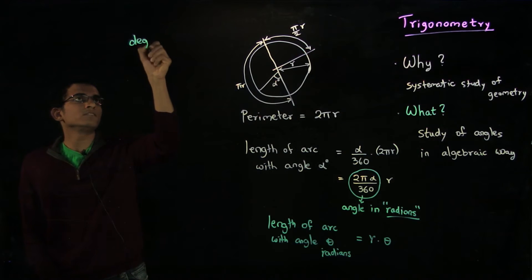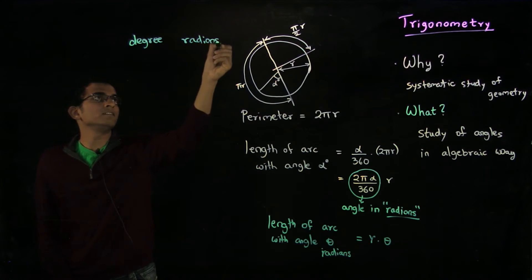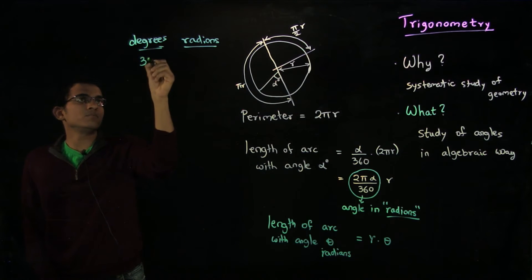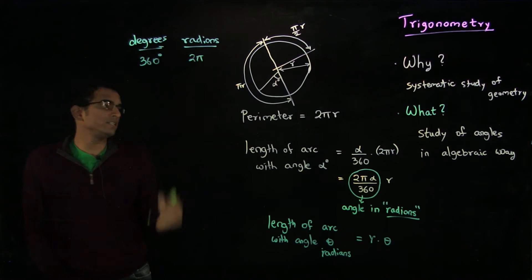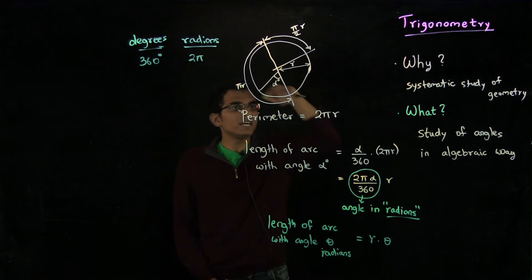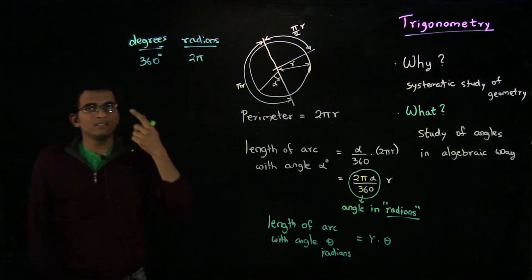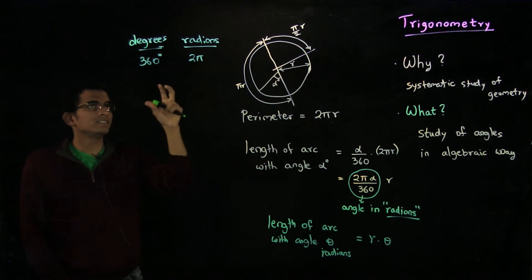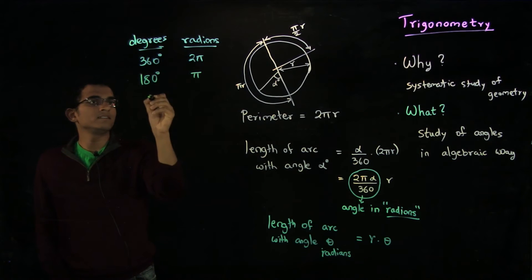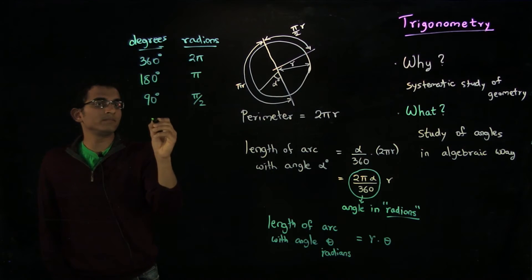Let us just to be more familiar with this conversion. For example, 360 degrees is 2π radians. That is what we just saw here. The perimeter of the entire circle is 2πr and 2π is the angle of the entire circle. Similarly, 180 degrees is π, 90 degrees is π/2 and so on.